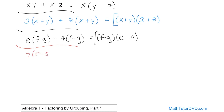What if we have seven times the quantity r minus s, plus t times the quantity s minus r? Here's where they try to trick you. Students look for common terms: I have a seven and a t — not common. I have r minus s and s minus r — these are not the same, so a lot of students will say they can't factor this, there's nothing they can do. But any time you have two things subtracted from one another, you can factor out a negative one. What we need is to turn the s minus r into an r minus s so it'll match.